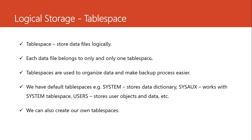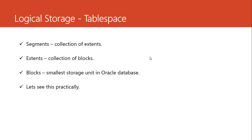The tablespace has a data file, and the data file is broken down into segments, extents, and blocks. A segment is a collection of extents; extents are a collection of blocks; and blocks are the smallest storage unit in Oracle. So blocks make up extents, extents make up segments, and from the segment we have our data file, and then the tablespace. That has been the storage structures — it was lengthy but wonderful. In the next section we are going to look at instance management.